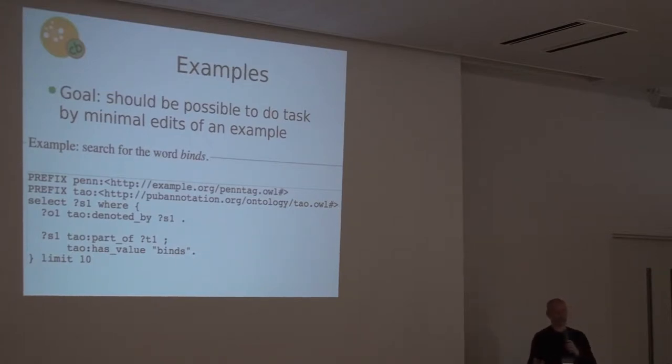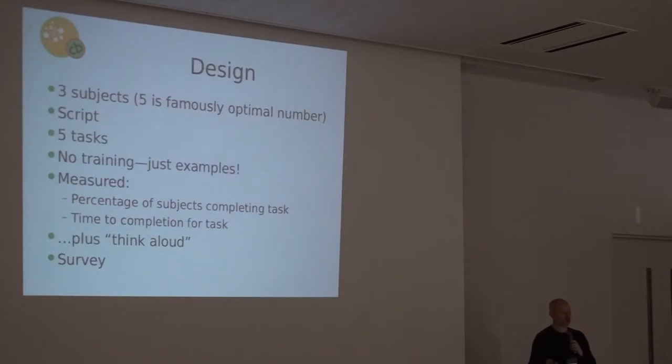Our assumption was that they would edit the examples that we gave them. We give them an example here to search for the word 'binds' and then we asked them to search for the word 'bonding' in our very basic test. We had three subjects—five is often said to be the most optimal number for a usability study. We put together a script with five tasks, gave the subjects no training, just examples to look at, and then we measured the percentage of subjects that completed the task and the time to complete the task.